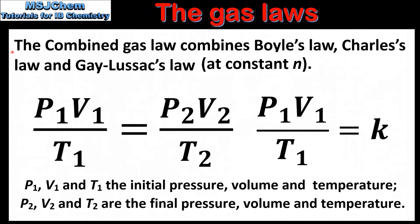The final gas law is the combined gas law, which combines Boyle's law, Charles' law, and Gay-Lussac's law. The combined gas law is: P1 multiplied by V1 divided by T1 is equal to P2 multiplied by V2 divided by T2. It can also be represented as P1 multiplied by V1 divided by T1 equals a constant K.